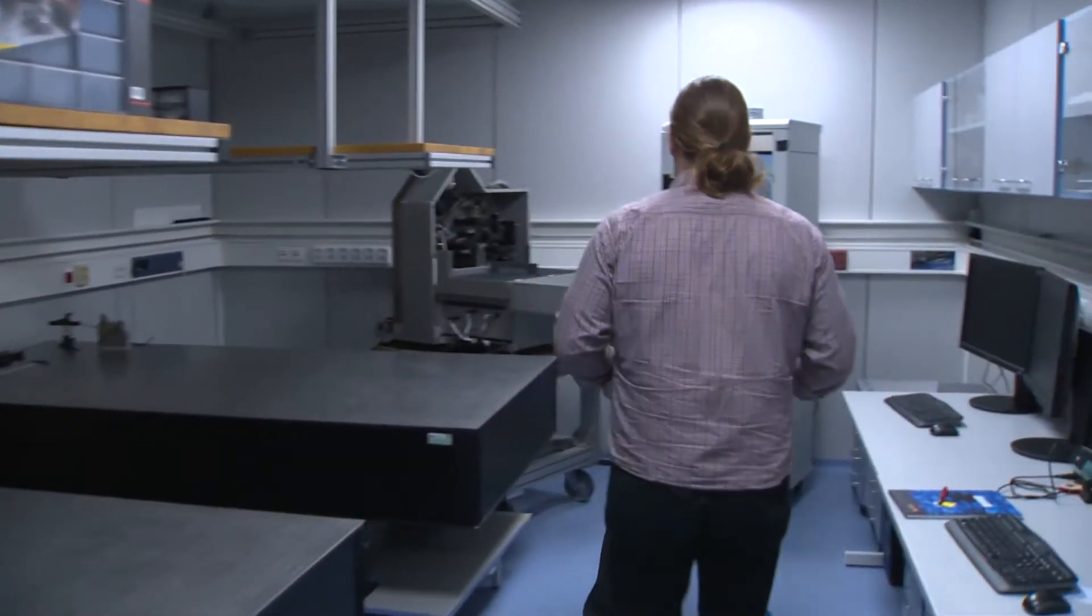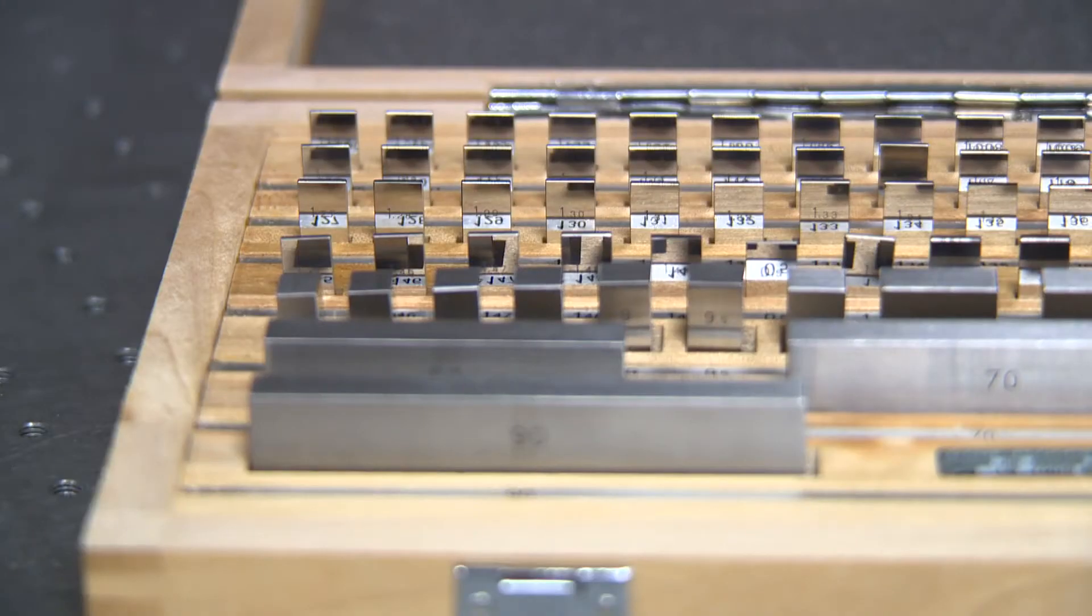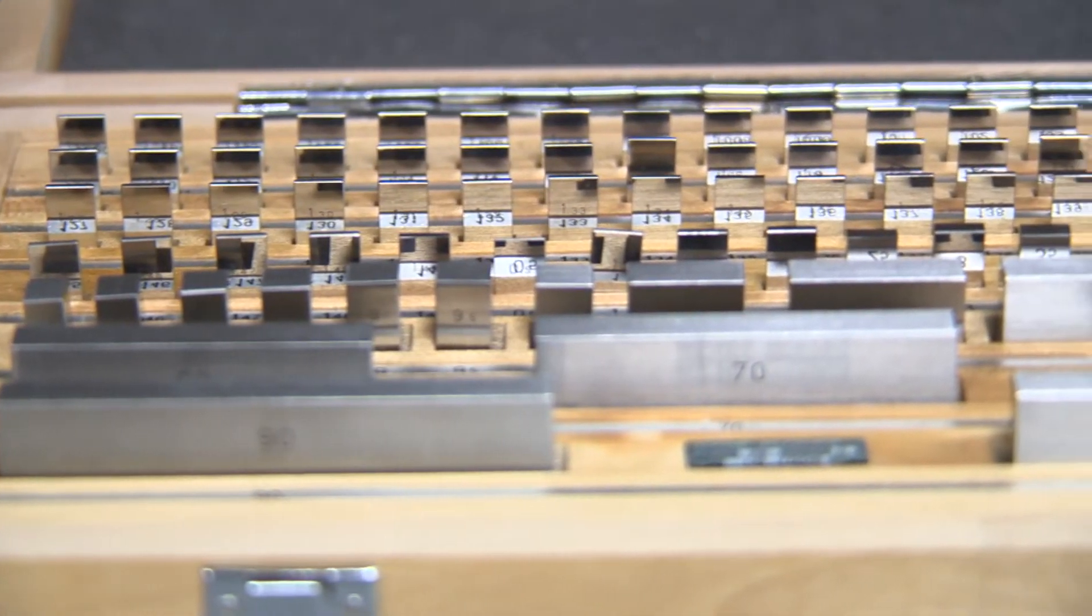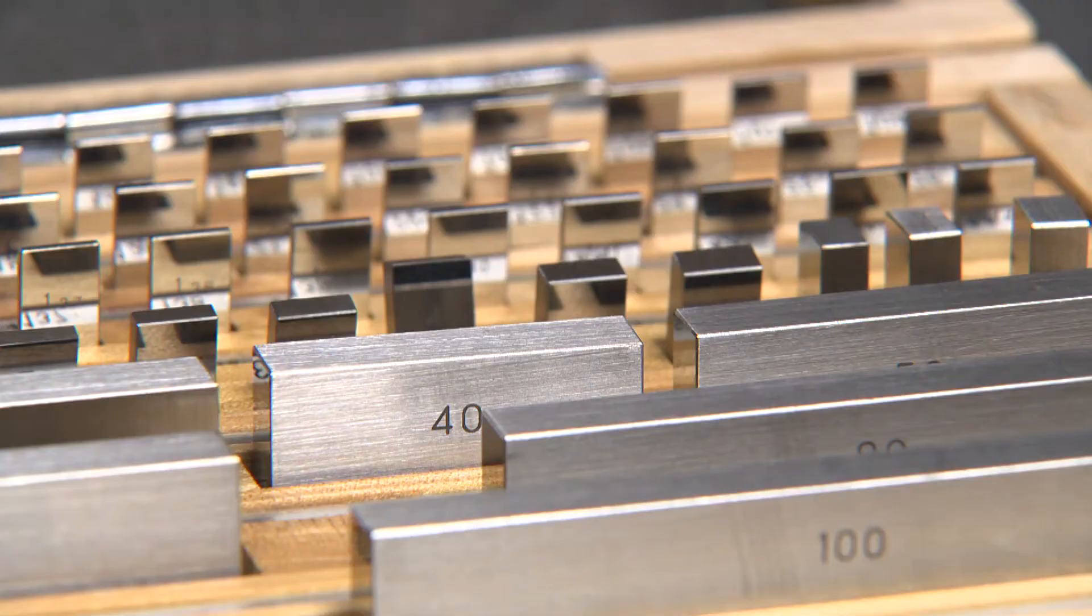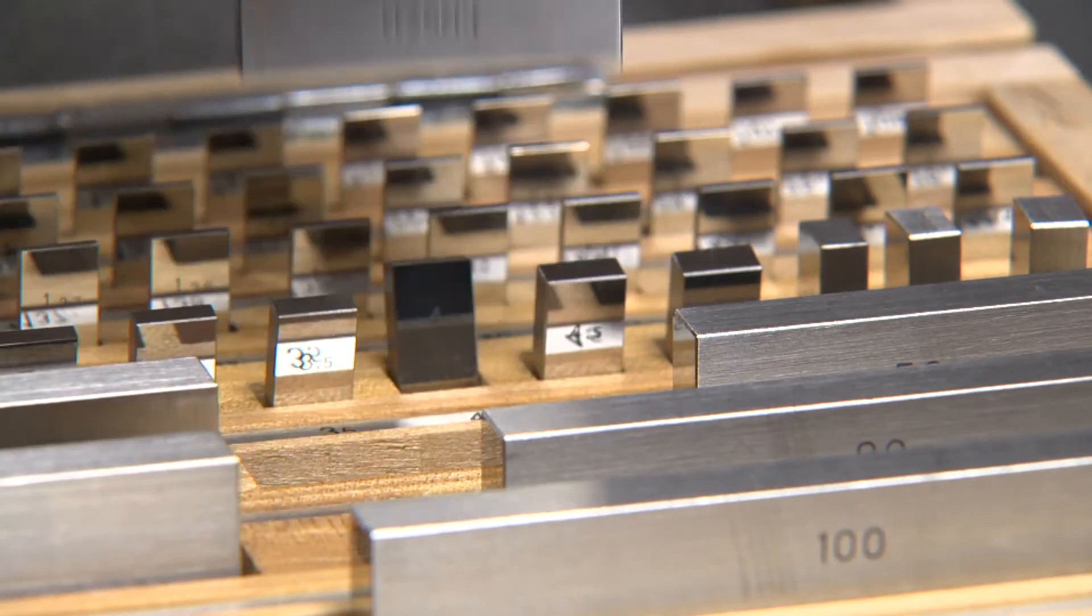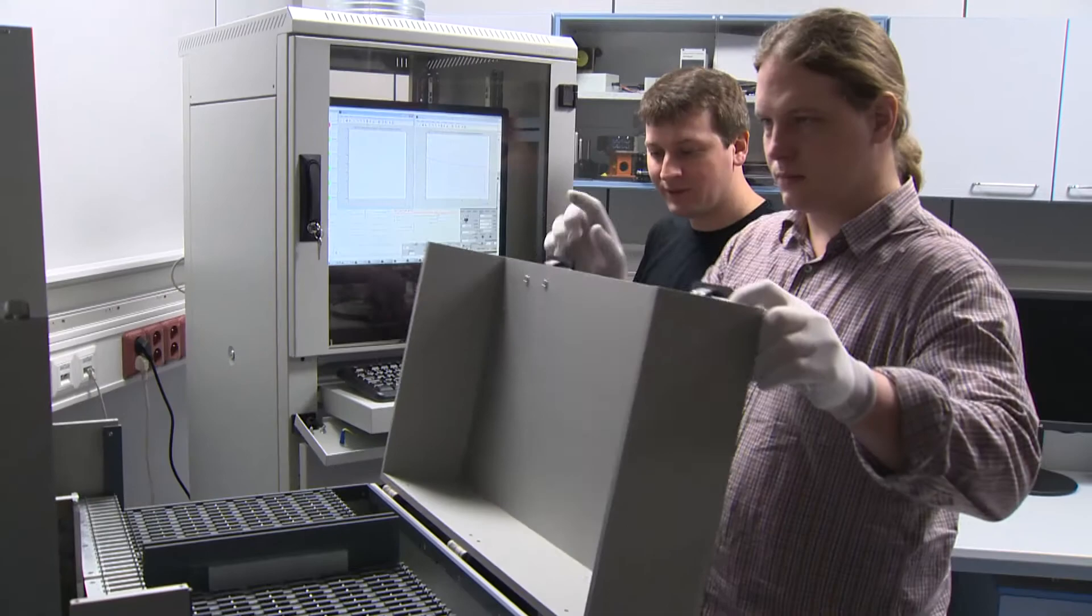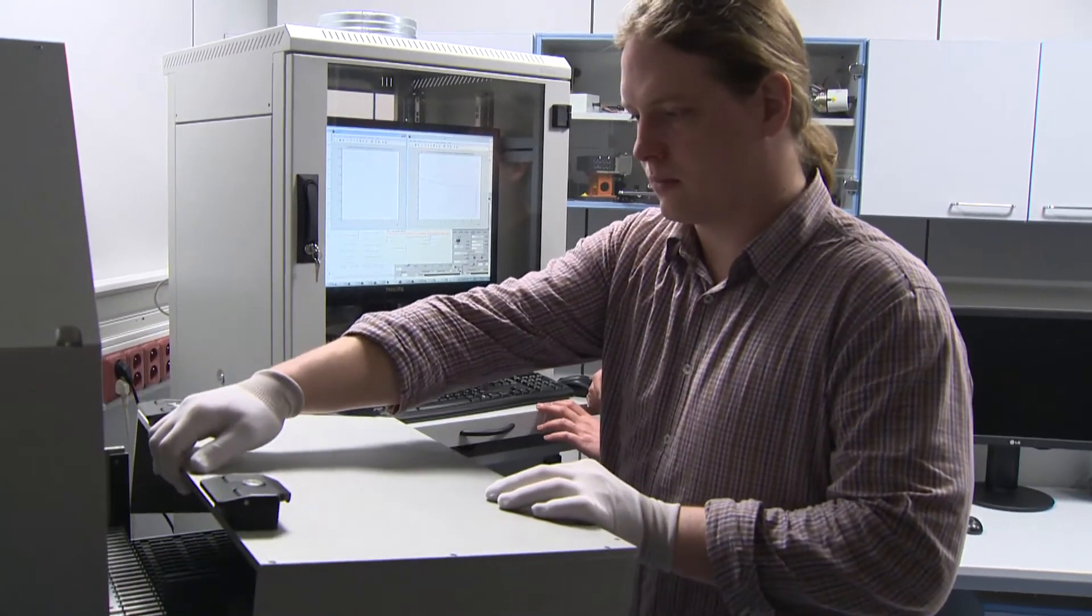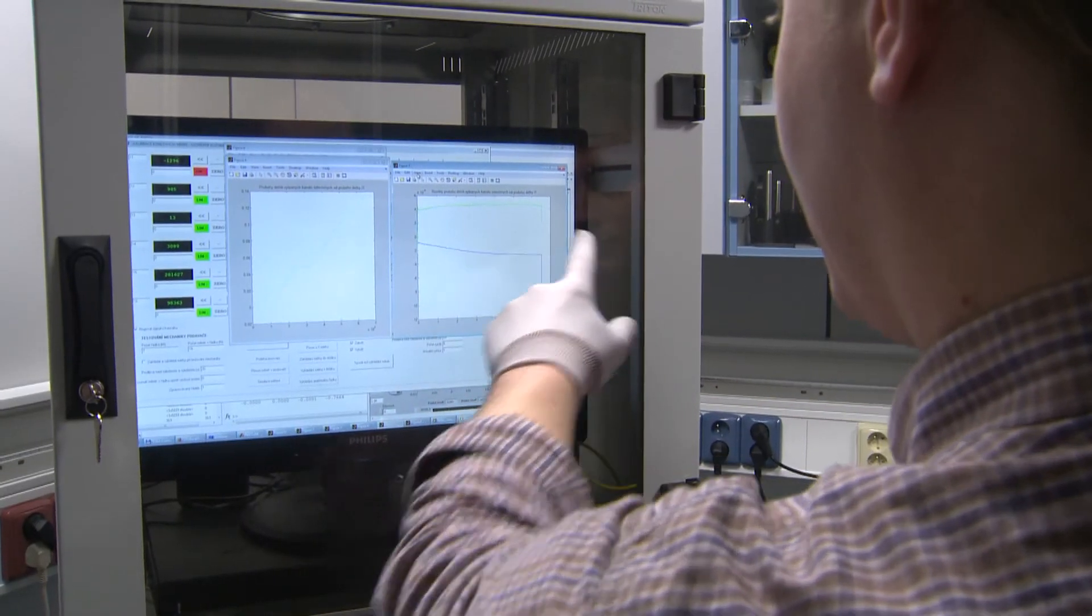The most accurate industrial mechanical length standards used are block gauges. In cooperation with Messing, we've developed a fully automated device for non-contact laser measurement of the length of these gauges. The device operates using a unique combination of laser light and white light. We own an industrial patent for this principle, and in 2012, it won us the gold medal at the International Engineering Fair in Bruneau.